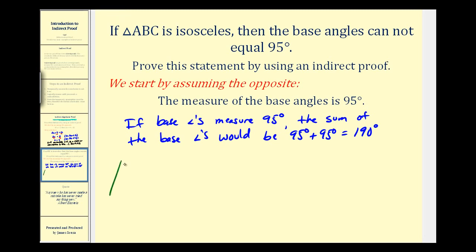Remember the base angles of an isosceles triangle are the angles that are opposite the congruent sides. Those two angles there. By now we should know this is not possible because this contradicts the triangular sum theorem, which states the sum of the interior angles of a triangle is equal to one hundred eighty degrees.